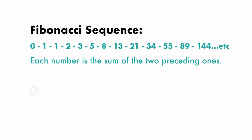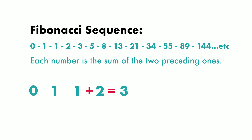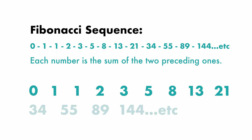So this is how it goes: 0, 1. So 1 plus 0 equals 1. Then 1 plus 1, the preceding number, equals 2. Then 2 plus 1 equals 3. Then 3 plus 2, the preceding number, equals 5. Then 5 plus 3, the preceding number, equals 8. And then it goes to 13, 21, 34, 55, 89, 144, and so on.